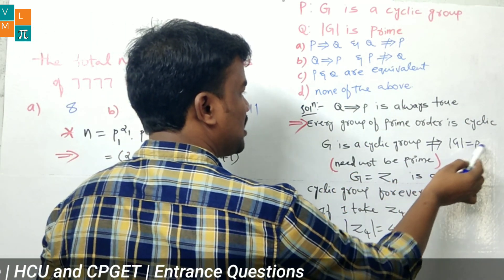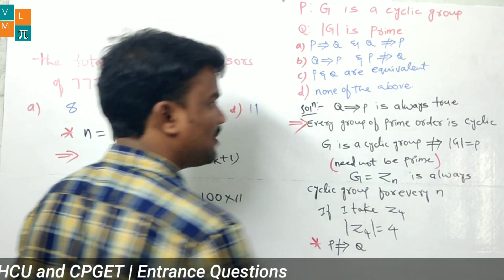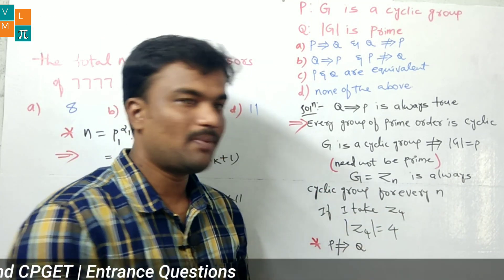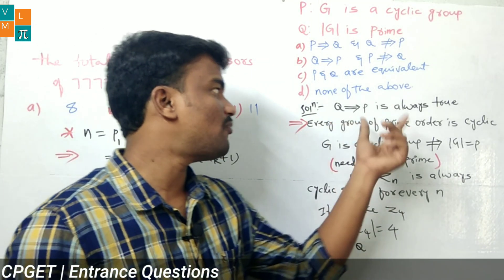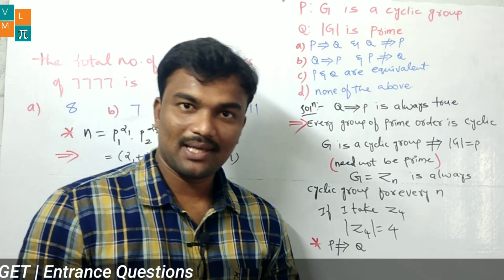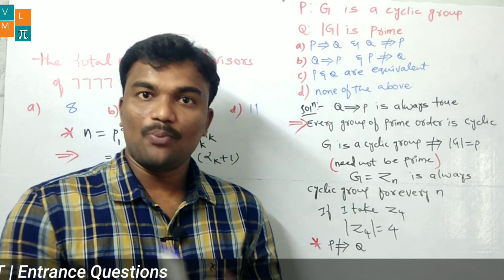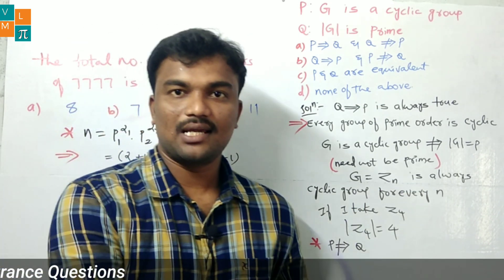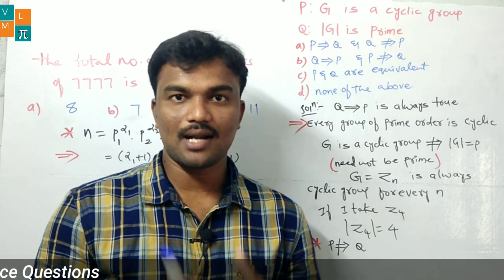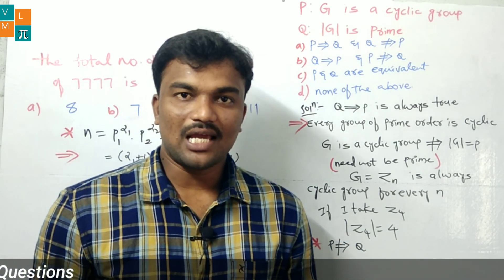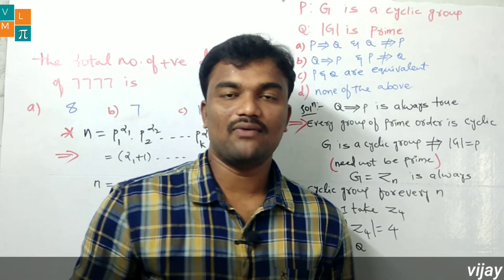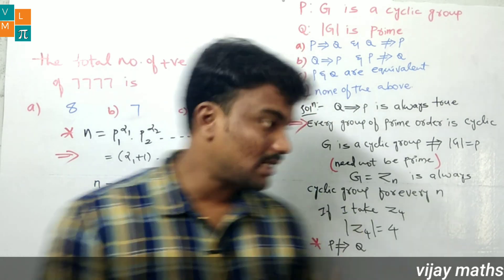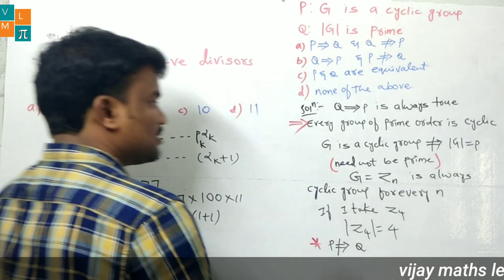Now, G is a cyclic group does not imply |G| is prime — where prime means a prime number. So the order of a cyclic group need not be prime. Every group of prime order is cyclic, but the converse — that every cyclic group has prime order — is not necessarily true.